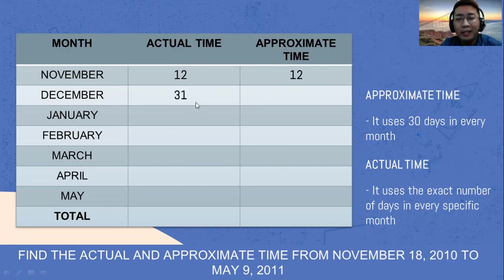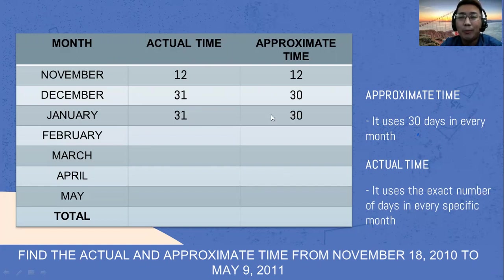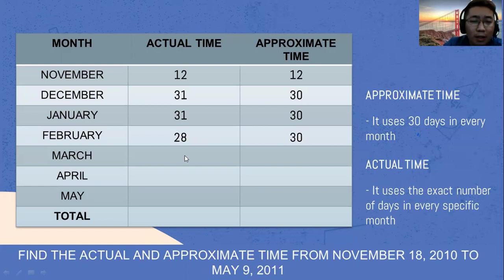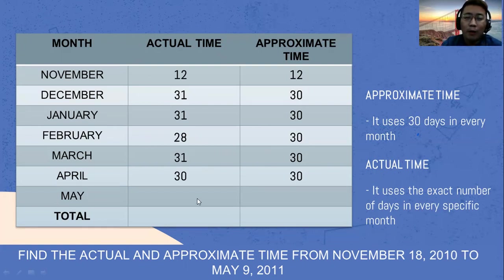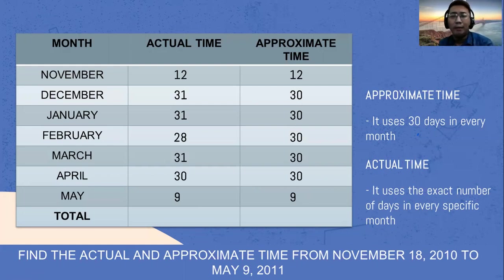For actual time, December has 31 days; approximate time will always be 30 days. January has 31 days for actual time and 30 for approximate time. February has 28 days for actual time and 30 for approximate time. March has 31 days for actual time and 30 days for approximate time. April has 30 days for actual time and 30 for approximate time. Since we are ending on May 9, we use 9 for both actual and approximate time.